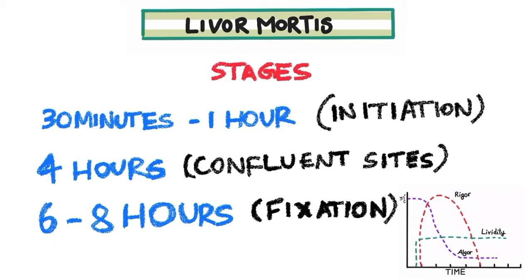Like algor mortis, livor mortis has various stages. In the first 30 minutes to 1 hour, initiation of livor mortis begins in the dependent parts. By 4 hours, confluent sites of staining appear, meaning large areas of post-mortem staining are visible. By 6 to 8 hours, fixation of post-mortem staining occurs — once fixed, even if the body position is changed, the post-mortem staining pattern will not change, helping identify the position of the body at the time of death.